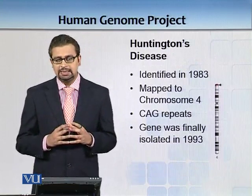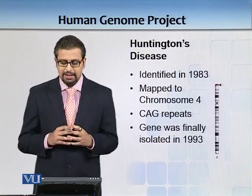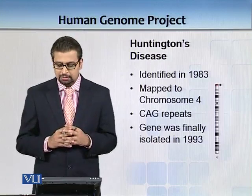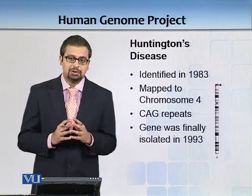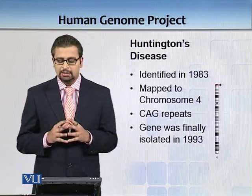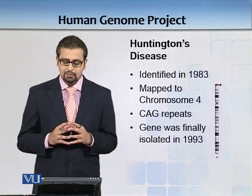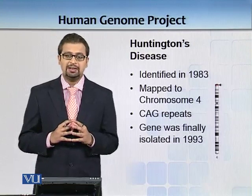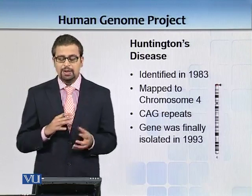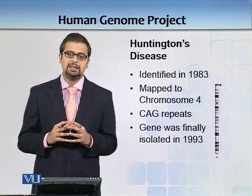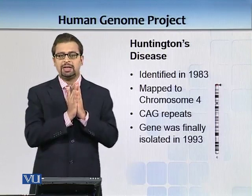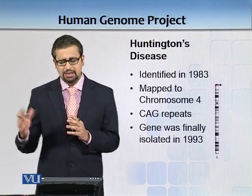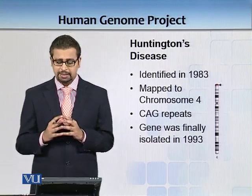We have to try to detect all the variations. One key example is Huntington's disease, which was mapped to chromosome 4 and identified in 1983. In Huntington's disease there are long stretches of CAG repeats, and therefore it is known as a trinucleotide repeat disease.